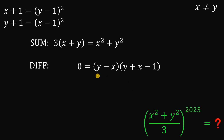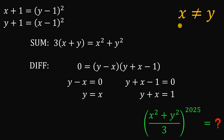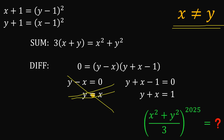Using the zero product property, we can say that y minus x equals 0, or y plus x minus 1 equals 0. Solving: from the first equation y equals x, and from the second, x plus y equals 1. But don't forget — x is not equal to y. So the case y equals x is rejected. The only possible solution is x plus y equals 1.